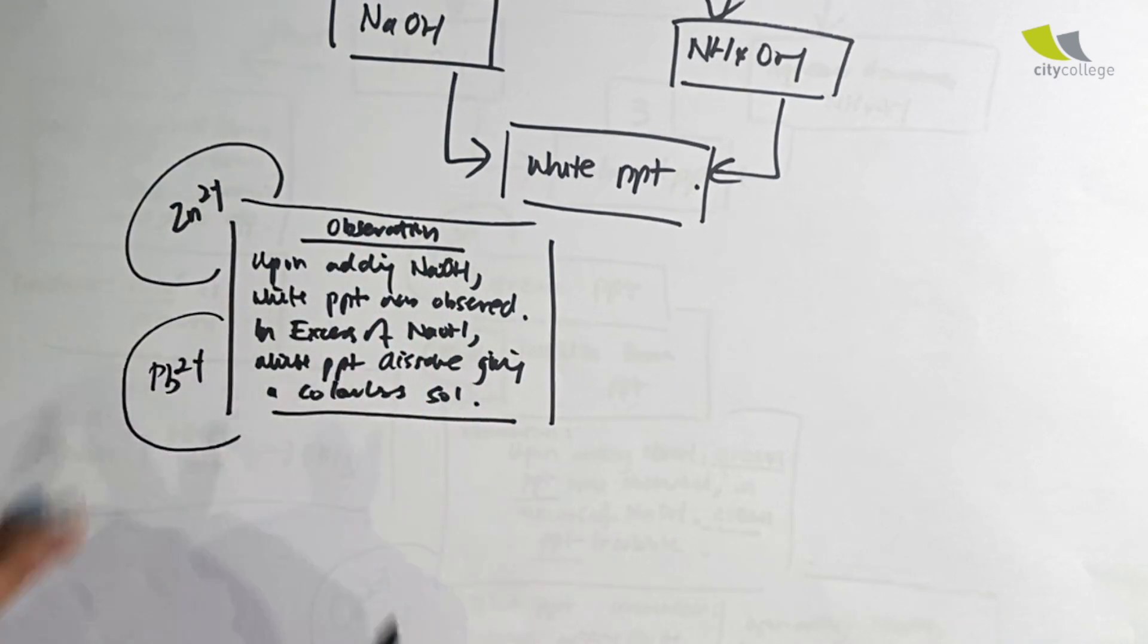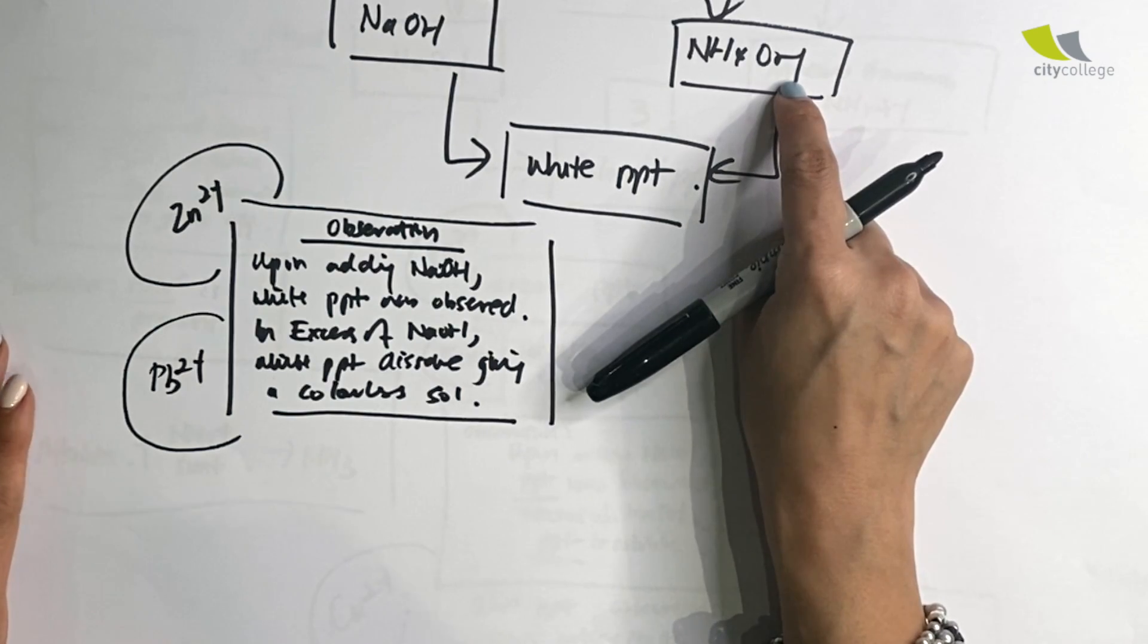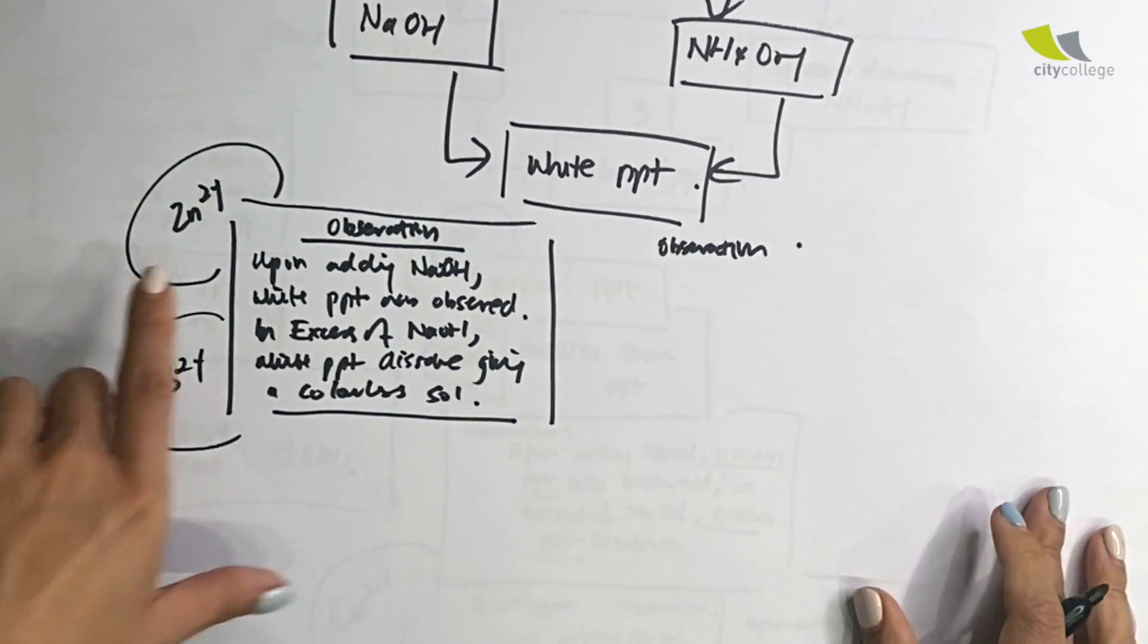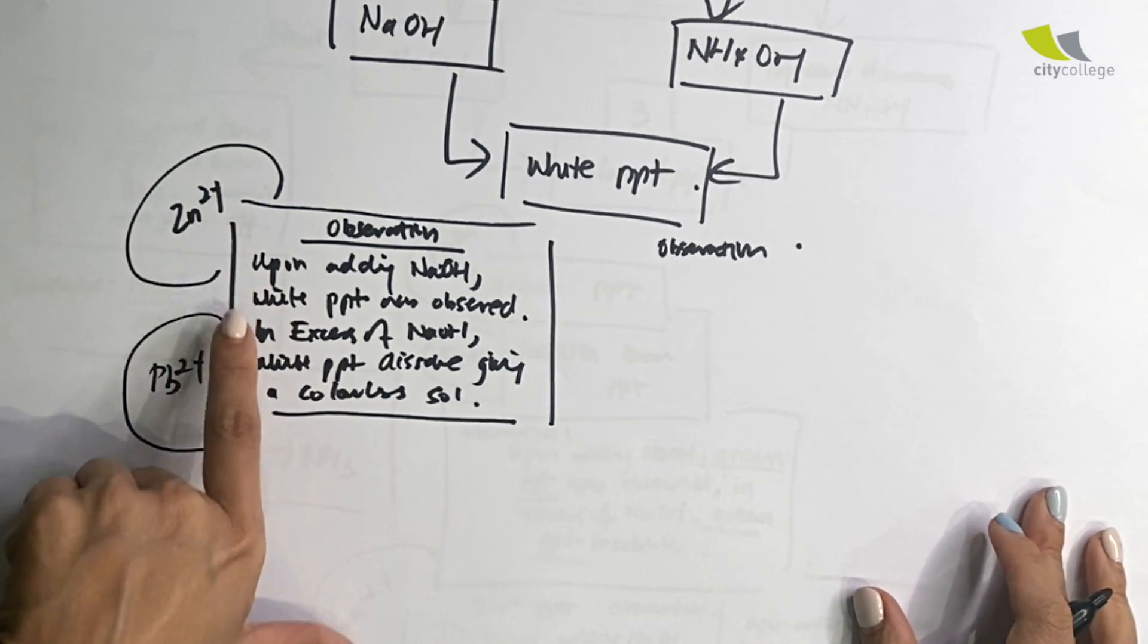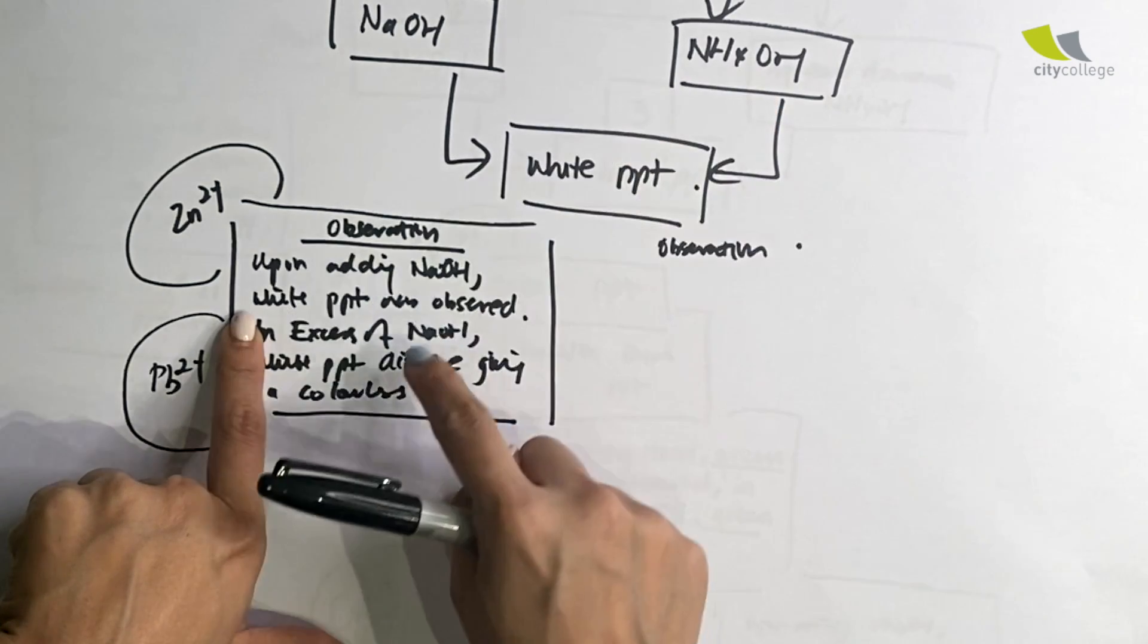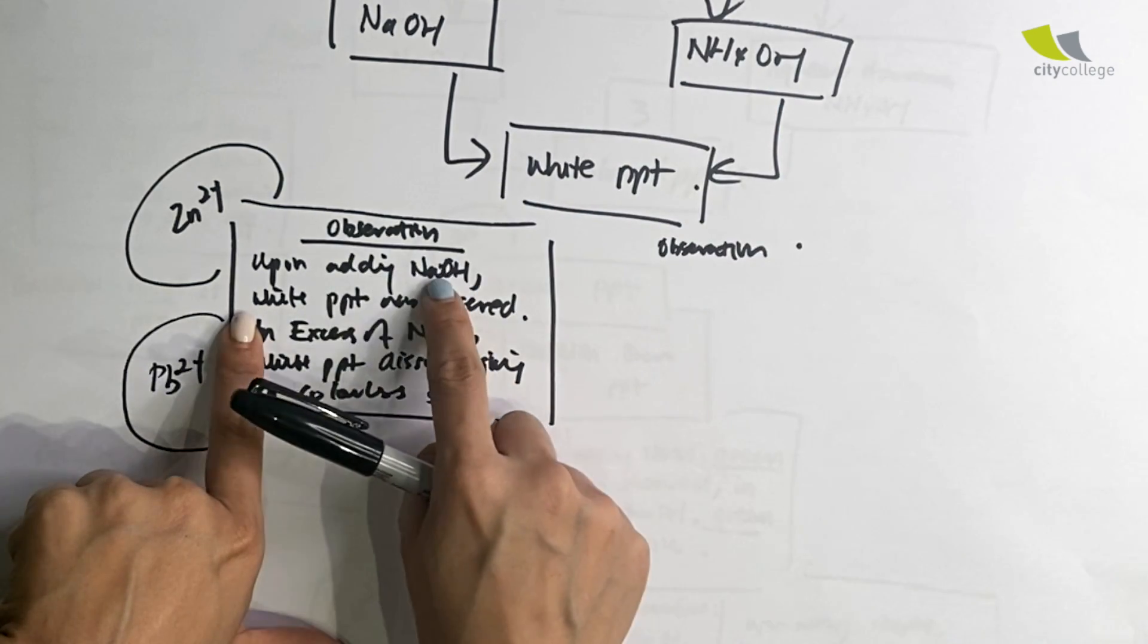The observation will be this: for Zn2+, when you add NH4OH, the same thing will occur. Upon adding NH4OH, white ppt was observed. In excess of NH4OH, white ppt dissolved, giving a colorless solution. That is Zn2+.